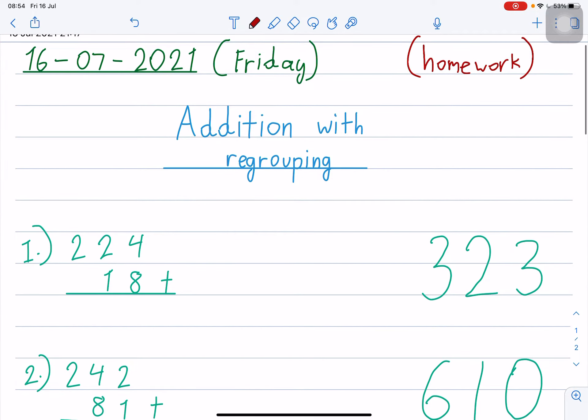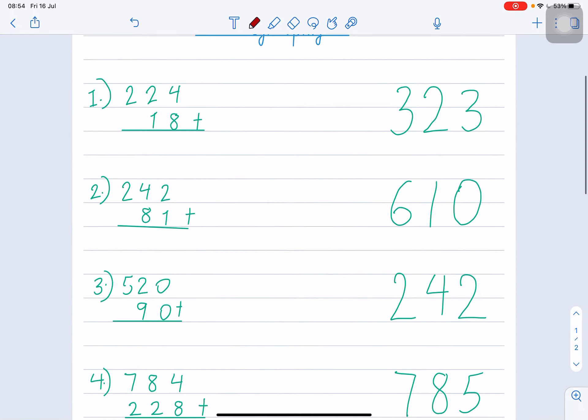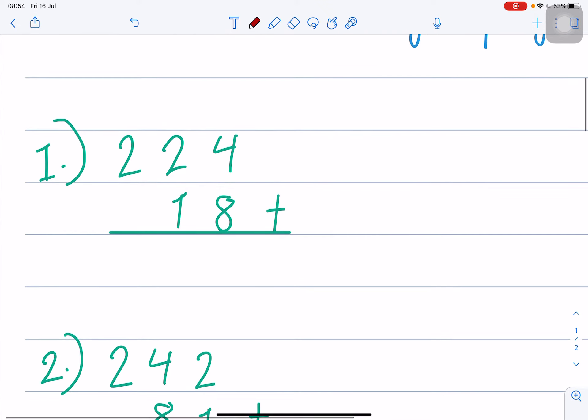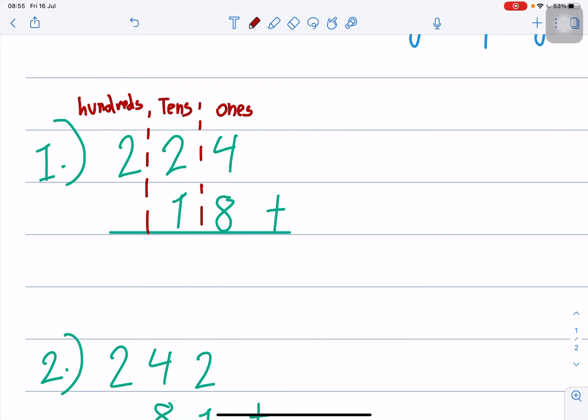Your homework is matching. Addition with regrouping matching. So for example number one, you must do step one: add the ones, step two: add the tens, step three: add the hundreds. If have to carry, you must carry. If no carry, then no carry.